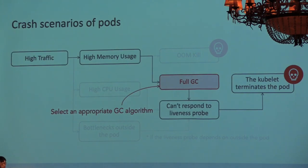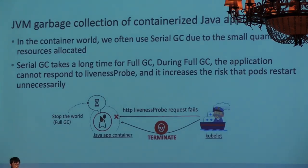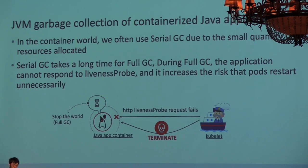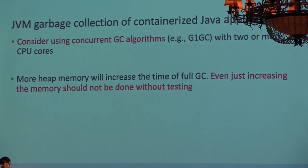Next, we will discuss how to prevent the pod from stopping triggered by full garbage collection. In containers, resources are often allocated in relatively small amounts, so the serial GC is often used. Since serial GC takes a long time for full garbage collection, it is easy for the liveness probe to fail and for kubelet to terminate the pod. So if the full GC stop time makes your application unstable, please consider algorithms that emphasize response time, such as G1 GC.